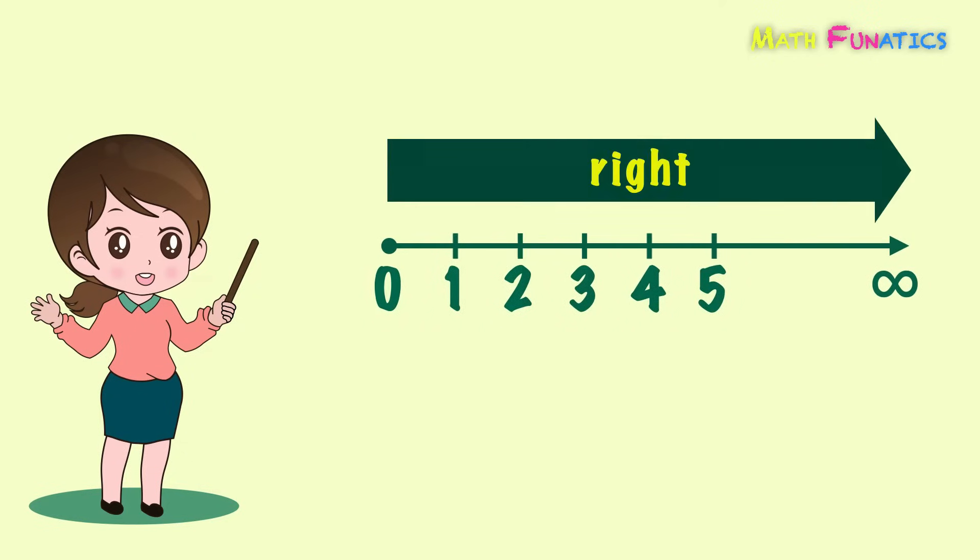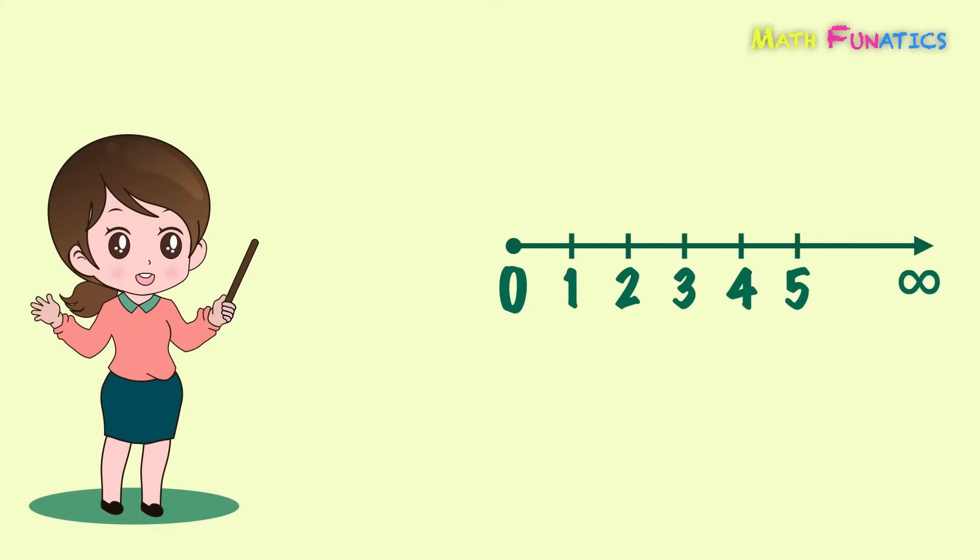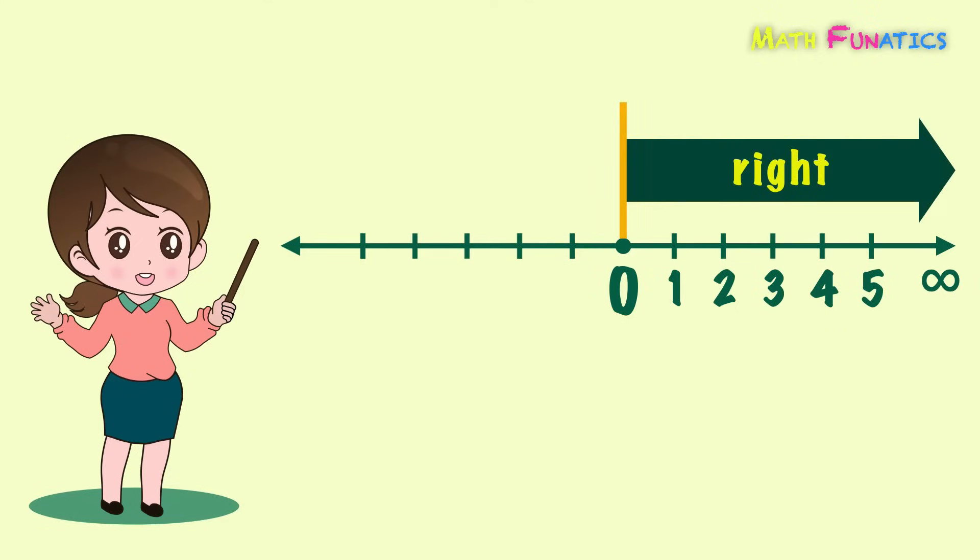This number line only shows the numbers specifically on the right of 0. But the truth is, the number line actually goes in both directions. So aside from the numbers we see on the right of the number line starting with 0, we also have numbers on the left.